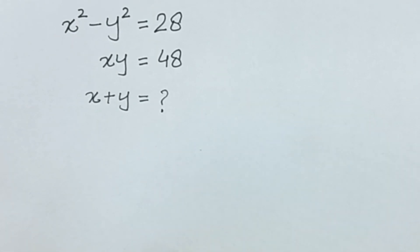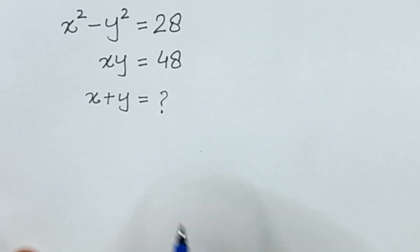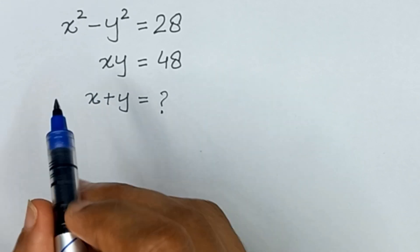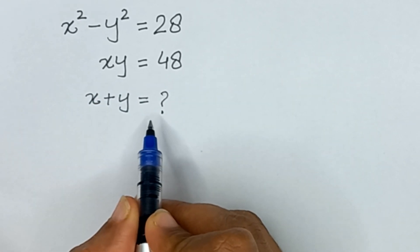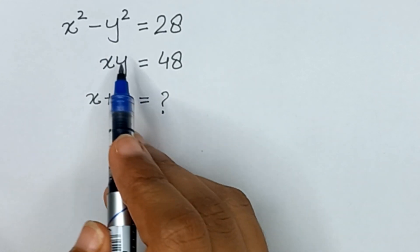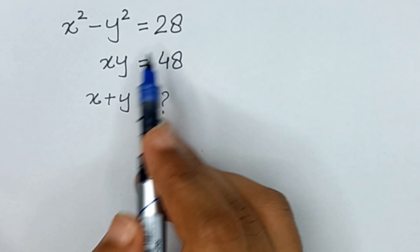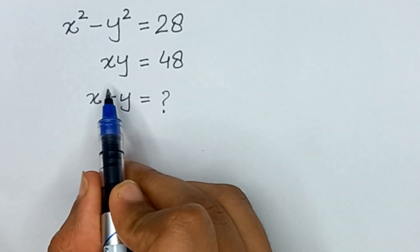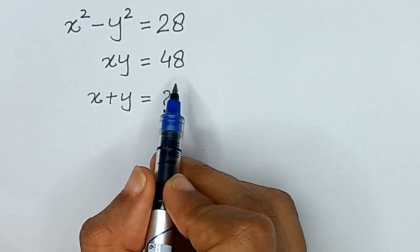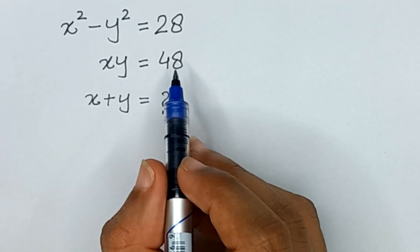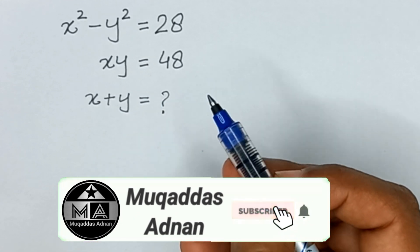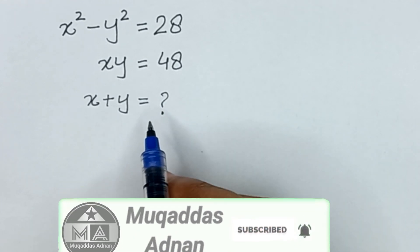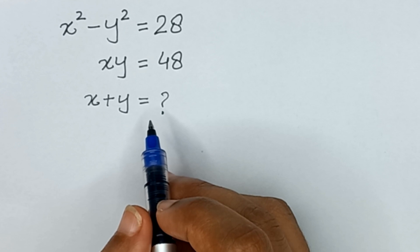Assalamu alaikum friends, welcome back to my channel. Hope you all are fine. Today we'll find the value of x plus y from these two equations: x squared minus y squared equals 28, and xy equals 48. If you have not subscribed to my channel yet, please subscribe first and press the bell icon to get notifications of other videos.